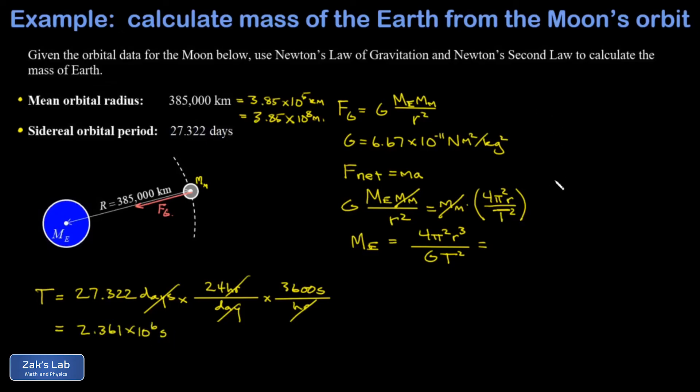So we plug everything into our formula and we smash it all into our calculator. And when I run the numbers on this, I get 6.06, just keeping three sig figs, 6.06 × 10²⁴ kilograms. The accepted value for the mass of the Earth is actually 5.97 × 10²⁴ kilograms, so we have a little bit of error here.